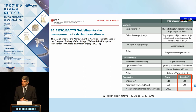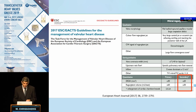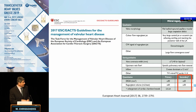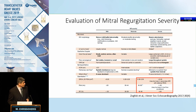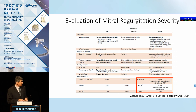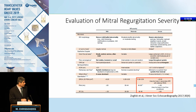Moving on to assessing severity of mitral regurgitation: the European guidelines from 2017 define severe primary MR as an EROA over 40 mm² with a regurgitant volume over 60 mL. For secondary or functional mitral regurgitation, the ERO level is set at 20 mm² and the regurgitant volume at 30 mL. From the US side, the guidelines have kept the severity index for mitral regurgitation at 40, both for degenerative and functional mitral regurgitation.